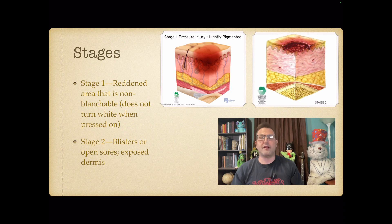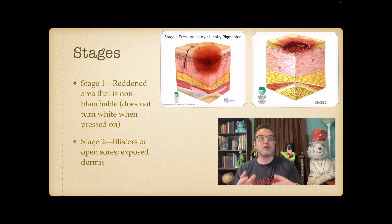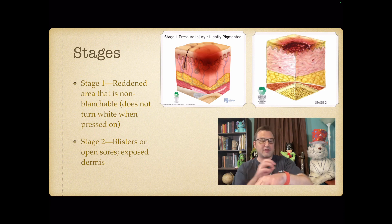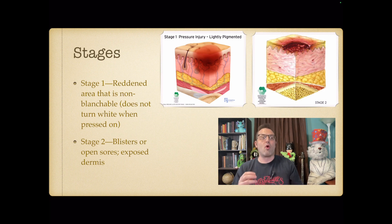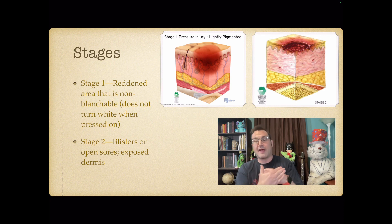Stage 2 is when the epidermis has been damaged and the dermis is exposed. This includes any excoriation scratched down to the dermis, a sore that has rubbed open to the dermis, or a blister — because even if covered by a bubble, the epidermis has been breached and the dermis is exposed.